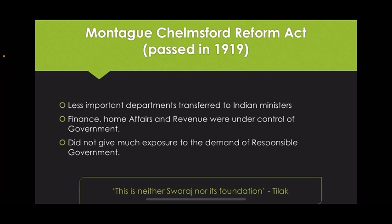The Montague-Chelmsford Reform Act was passed in 1919. Less important departments were transferred to Indian ministers, while Finance, Home Affairs, and Revenue remained under the control of the government. It did not adequately respond to the demand for responsible government. Tilak criticized the act in the words, 'This is neither Swaraj nor its foundation.' The Indians understood that if they have to subdue the British government, the agitation needs to be more firm. India got prepared for a new movement, which will be studied in the next chapter.